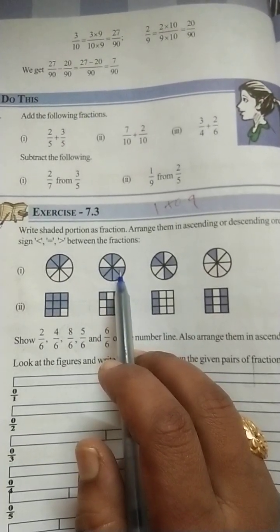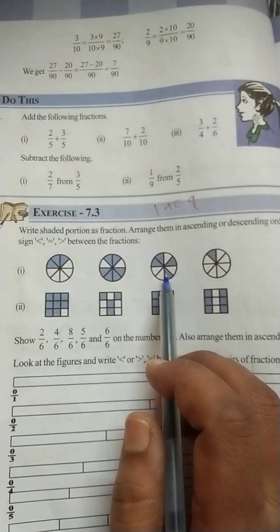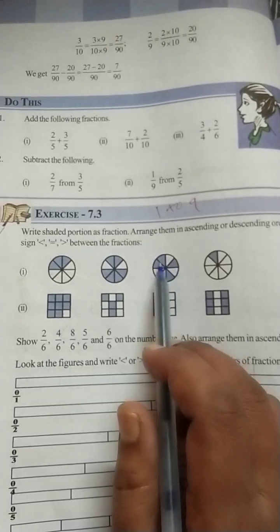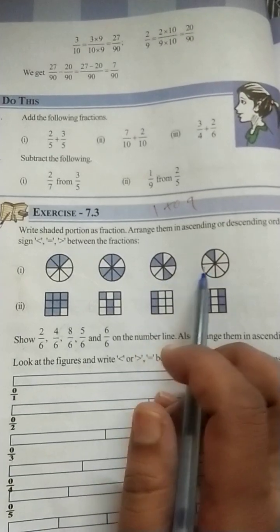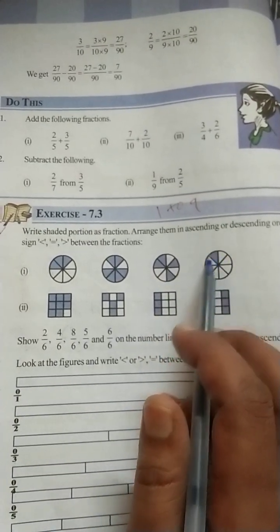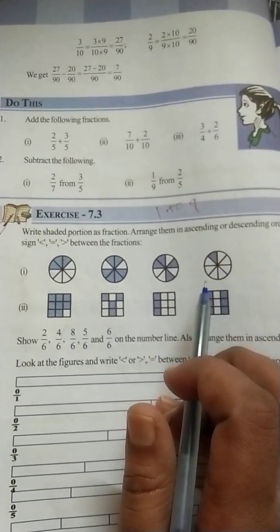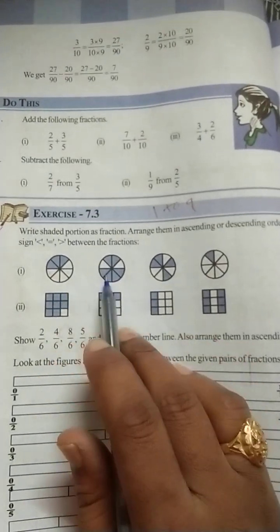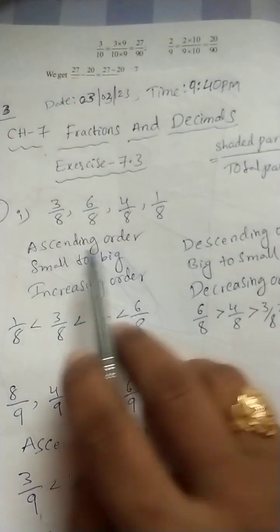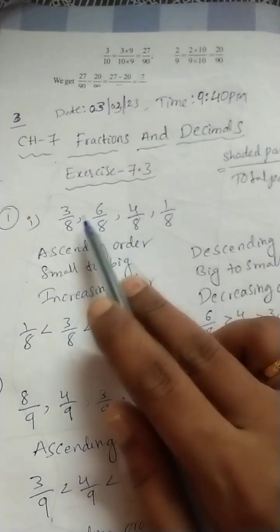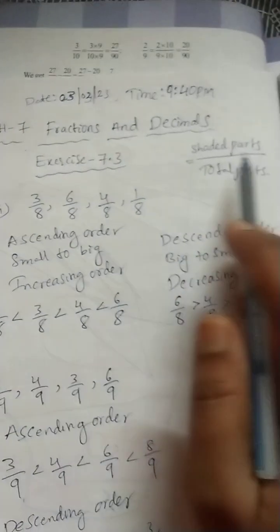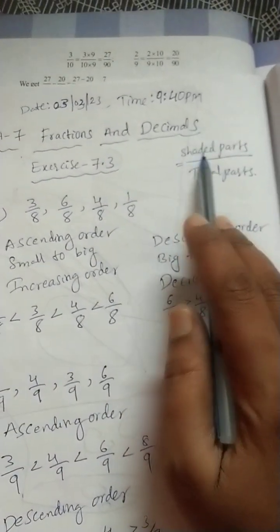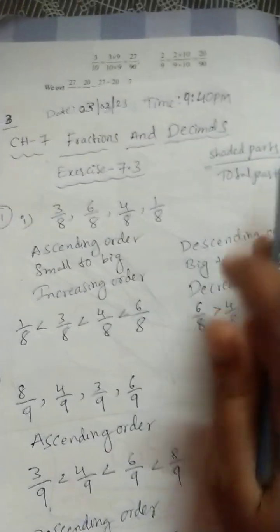Okay, here in this figure, 4 are shaded and 8 are total. And here, 1 shaded, 8 are total parts. So, all these figures: first figure 3 by 8, second figure 6 by 8, third figure 4 by 8, fourth figure 1 by 8. That's how we write shaded parts by total parts.